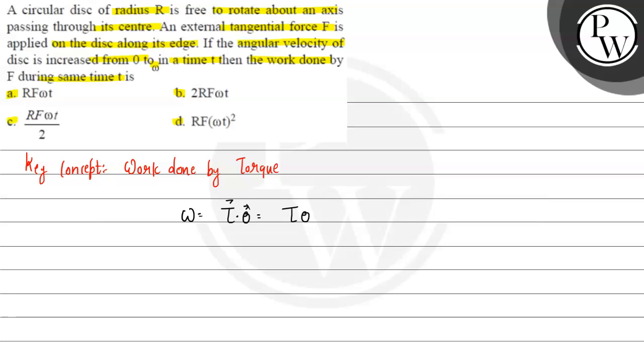Now the circular disk of radius R is free to rotate about an axis passing through its center. The center is free to rotate. And external tangential force F is applied at the edges.